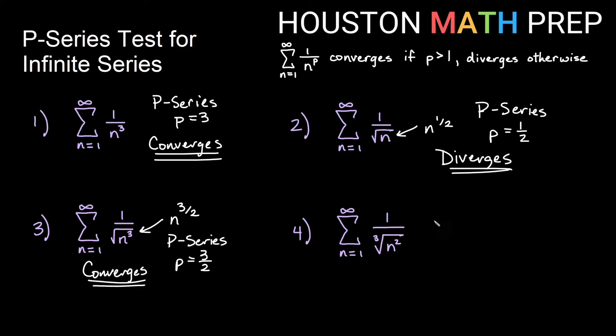Our next one looks a bit similar. We have 1 over n squared, then the cube root of that. We want to see this as n to the 2 thirds power. The cube root is 1 third, the square gives us the 2. So p equals 2 thirds. p is not greater than 1, so this diverges by the p-series test.